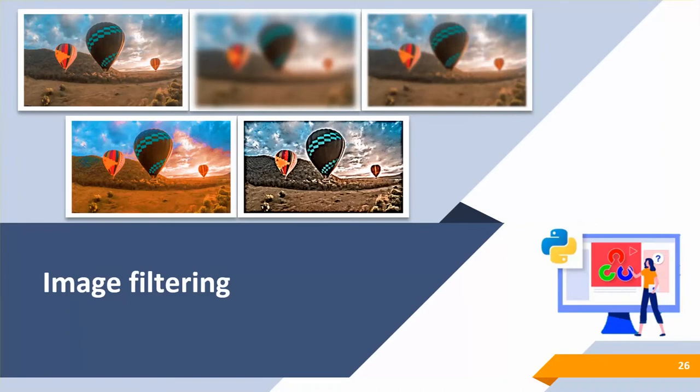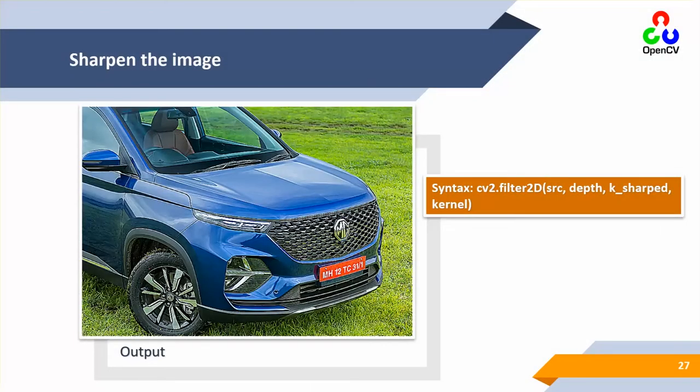We have image filtering commands. Image processing is essentially image filtering. In image filtering, different terms are used such as masking, structuring element, and image filter itself. The concept is that we have a complete image and then we have different working elements like structuring elements or filters of different sizes, which are usually three by three, and then we apply them on the image and see the results.